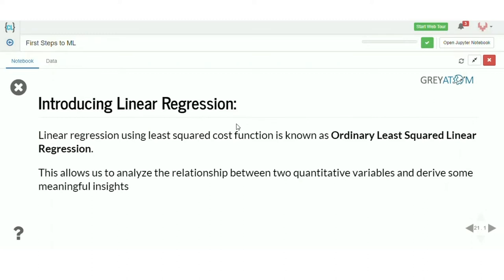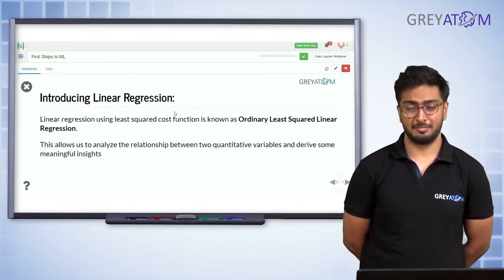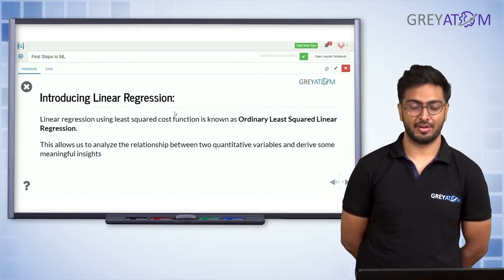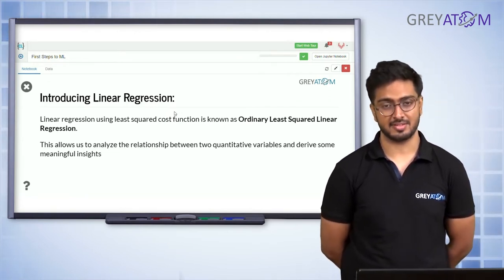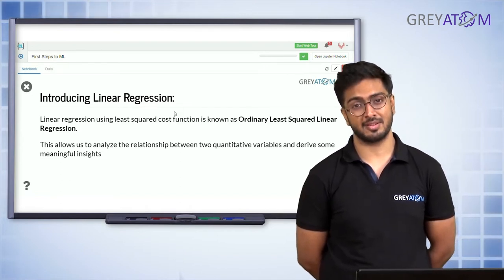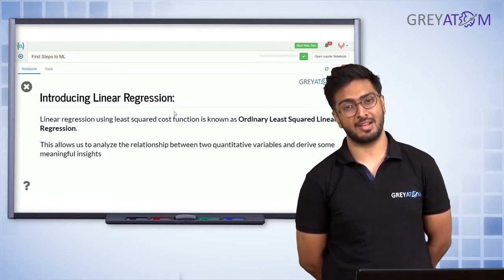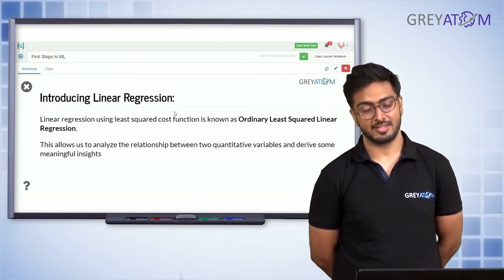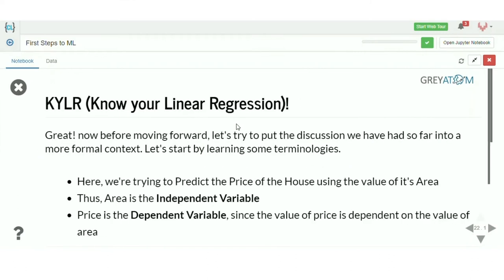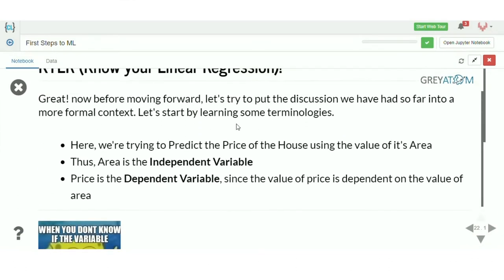Linear regression using a least squared cost function is known as Ordinary Least Squares linear regression. It's called 'linear regression' because we are trying to plot a straight line relationship between y and x. It's called 'least squared' because we are trying to minimize the cost function, which is a squared cost function. We are figuring out the values of beta 0 and beta 1 that minimize this value to its least — that's why it's called a least squared cost function.